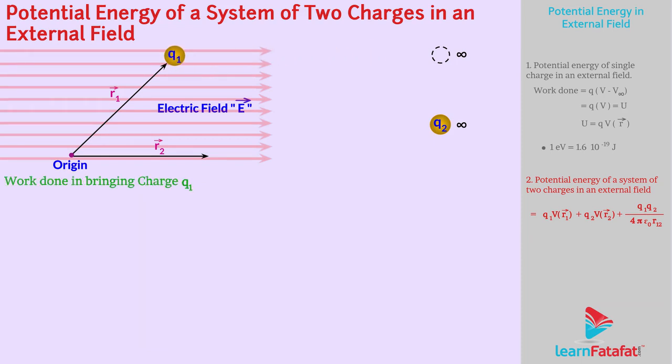Work done in bringing Q1 from infinity to R1 is Q1 V of R1. This work done is stored as potential energy. However,